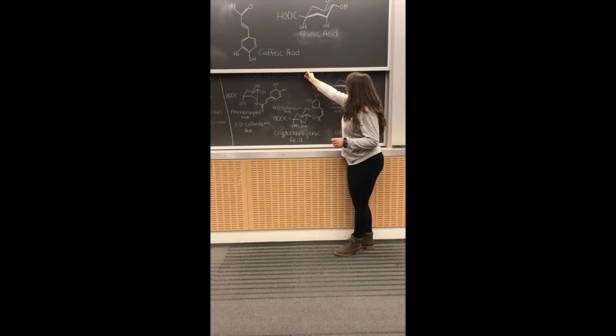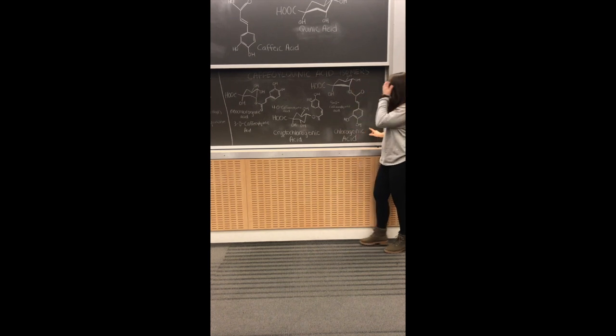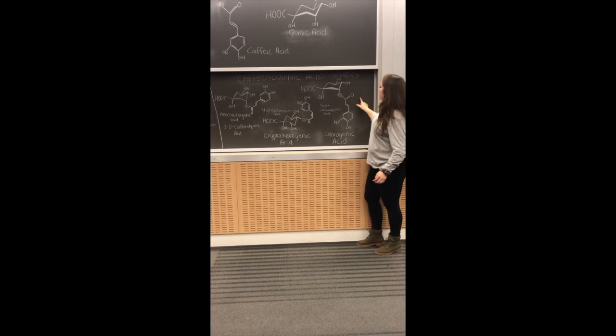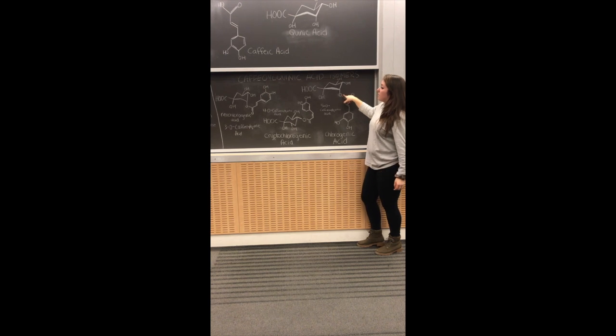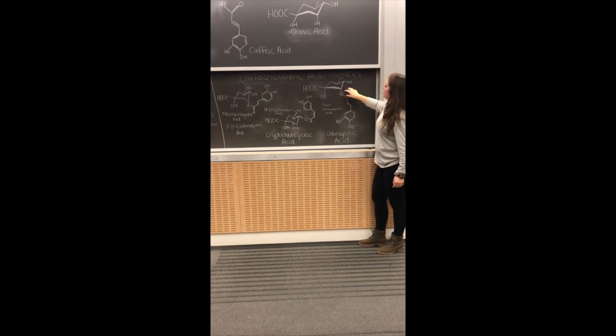So, if you look here at the chlorogenic acid, you can see where it once used to be an OH group with caffeic acid, now turned into an O-alkyl group.